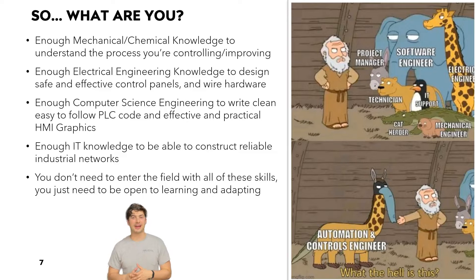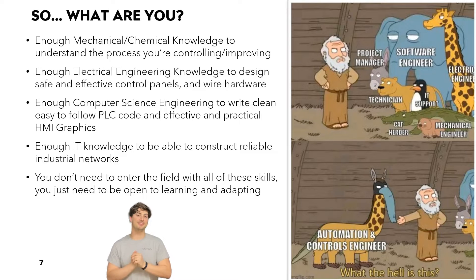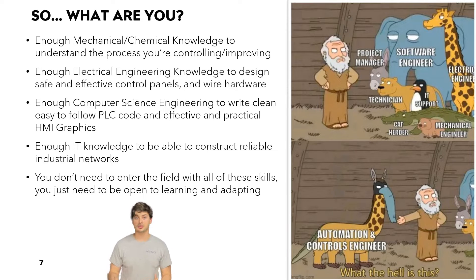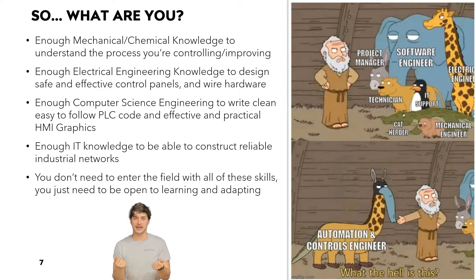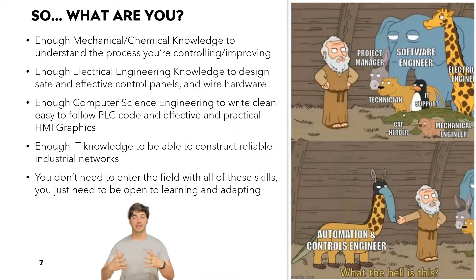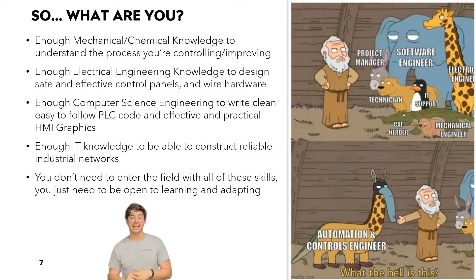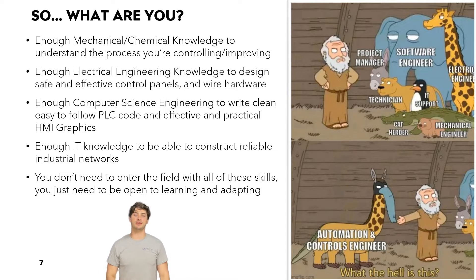A controls and automation engineer most commonly is not something you go to school for specifically. You have to have enough mechanical or chemical knowledge to be helpful in the process you're automating, enough electrical engineering knowledge to work with a panel design schematic, enough software development and computer science knowledge to write functional, elegant, easy-to-read and easy-to-debug PLC code, and on top of all that, dip your toes into IT with a little bit of industrial networking. You don't have to enter the field with all these skills, but you should enter with some and be ready to learn the rest.